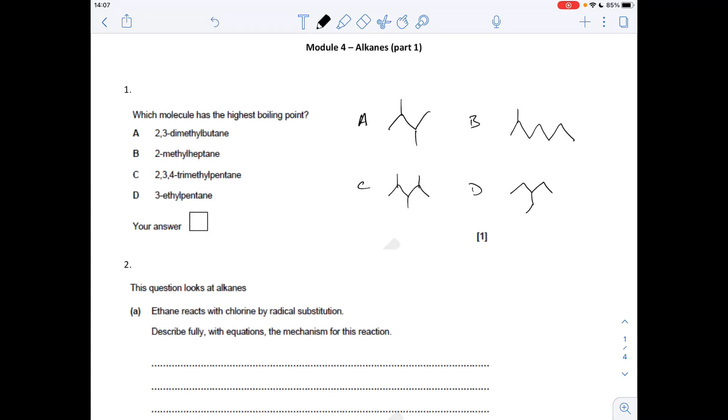Question one: I've just drawn out the skeletal formula for those four molecules. The one with the highest boiling point is going to have the least amount of branching to maximize its surface contact, so it's B.